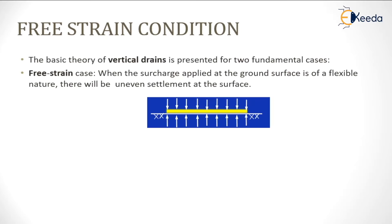The basic theory of vertical drain is presented for two fundamental cases. First is the free strain condition, in which the surcharge applied over the ground is flexible in nature and it causes an uneven settlement of the ground surface. In the figure you can see that the load coming over the ground is equal in nature but it results in uneven settlement.